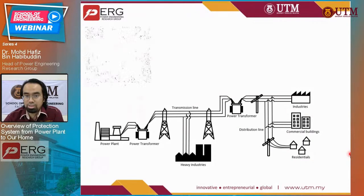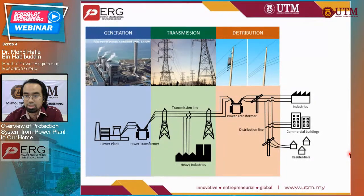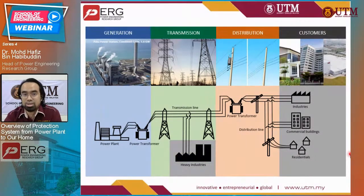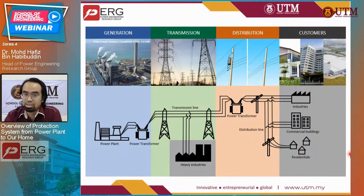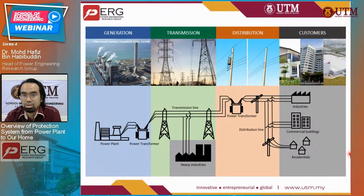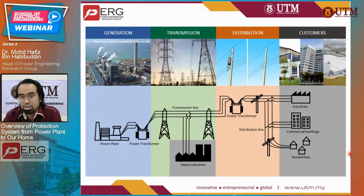The power system structure has remained the same ever since it was introduced: we have generation, transmission, and distribution to connect power to the customers. It has undergone massive improvement and advancement, but the structure remains the same — a good analogy is the internal combustion engine with its intake valve, compression, combustion, and exhaust stroke. It remains the same structure but has undergone tremendous advancement.